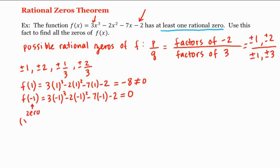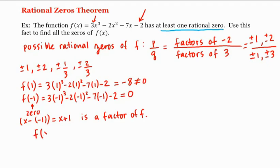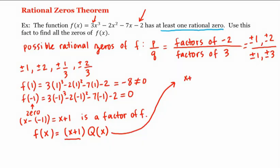Since negative one is a zero, by the factor theorem x minus negative one, or x plus one, is a factor of f. Therefore we can write f of x as x plus one times some polynomial q of x. We can find q of x by dividing f by x plus one. So let's do that: x plus one into three x cubed minus two x squared minus seven x minus two.